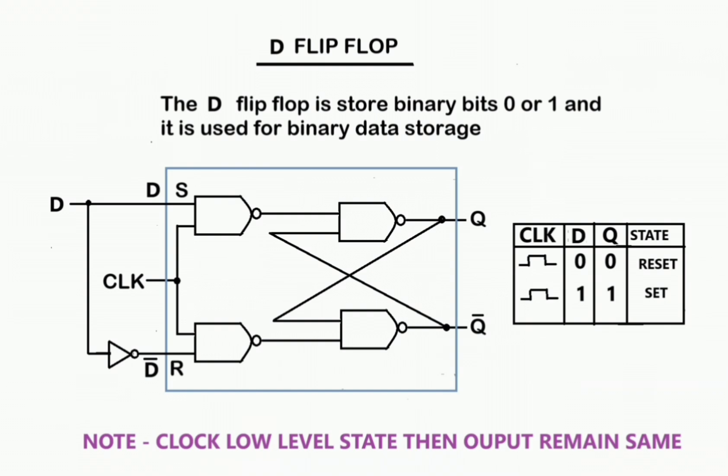The truth table is also given for the D flip-flop. During the leading edge of the clock, when D equals 0, output Q also equals 0, which is the reset condition.